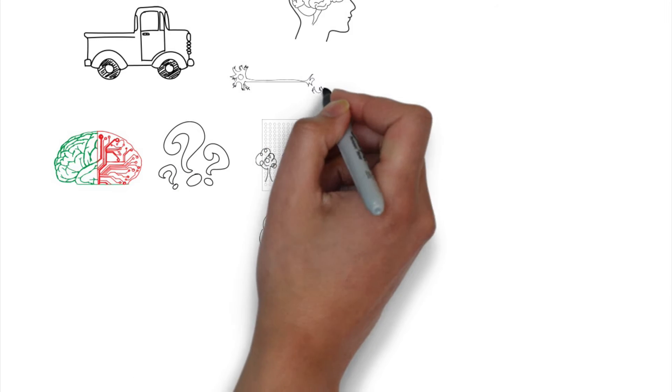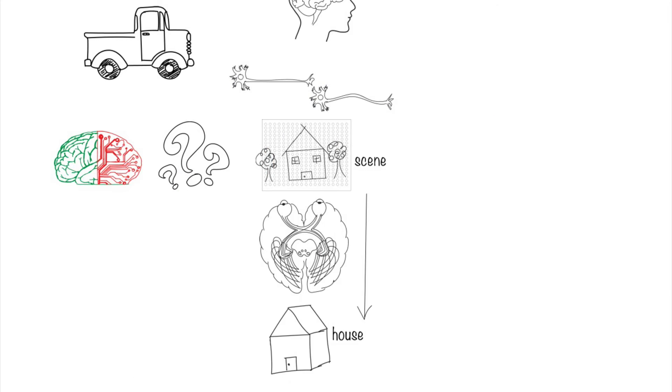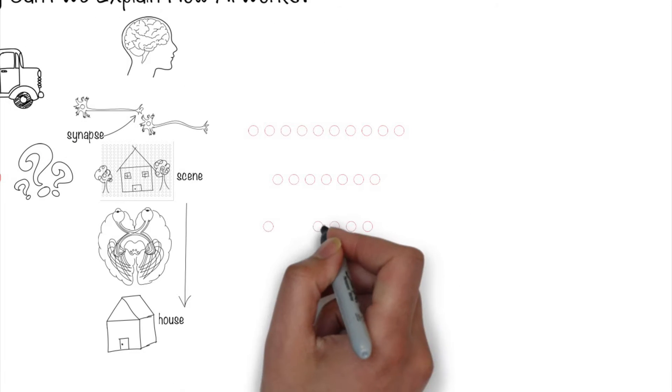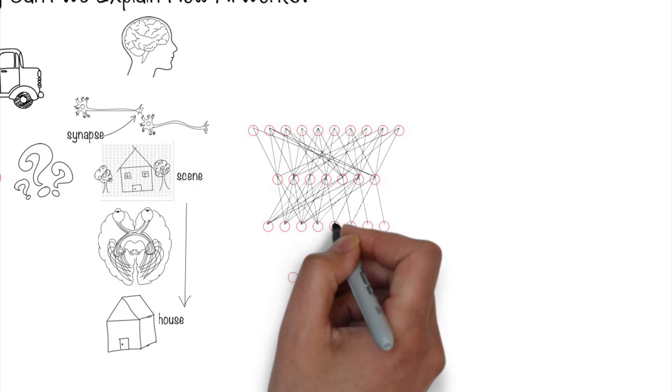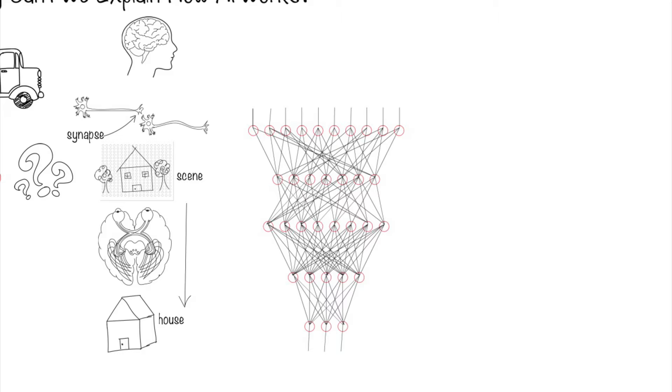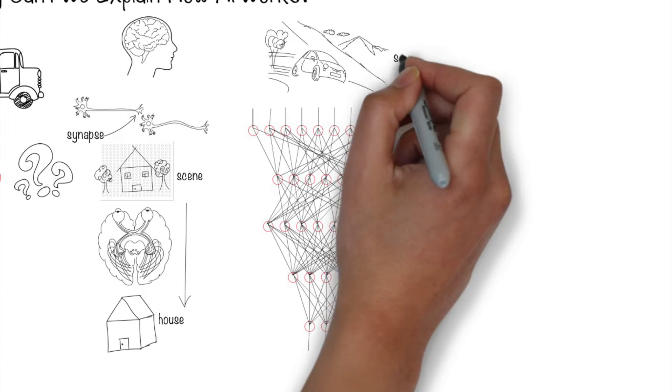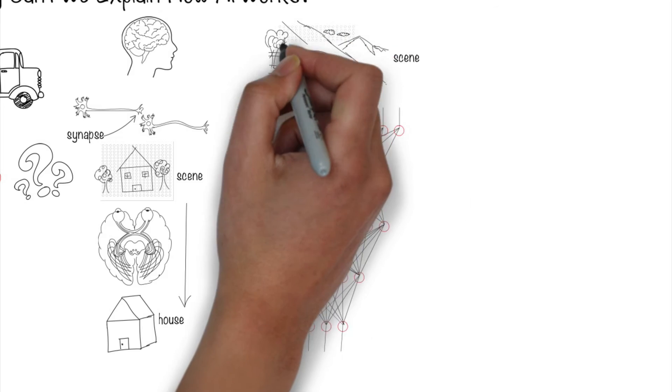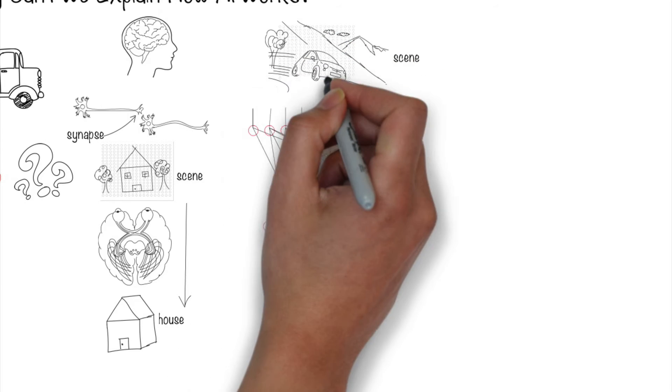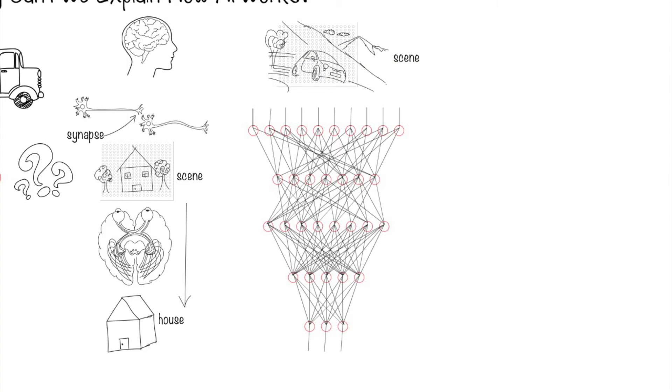Just like how we have billions of neurons connected with each other with a gap in between called the synapse, the deep artificial neural network is a set of nodes forming many layers and they connect with each other. The top layer takes the input, and as the signal travels through it transforms in some way until it gets to the output layer and we're able to recognize the object that's being observed.